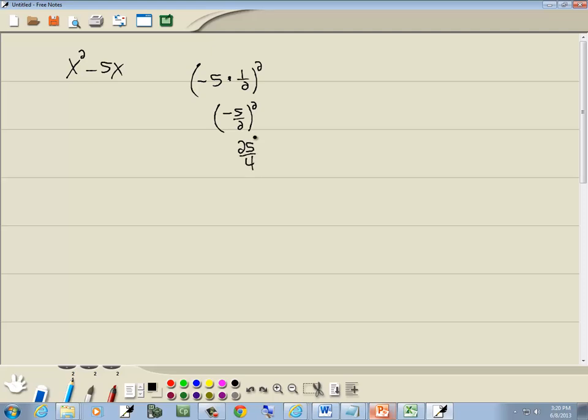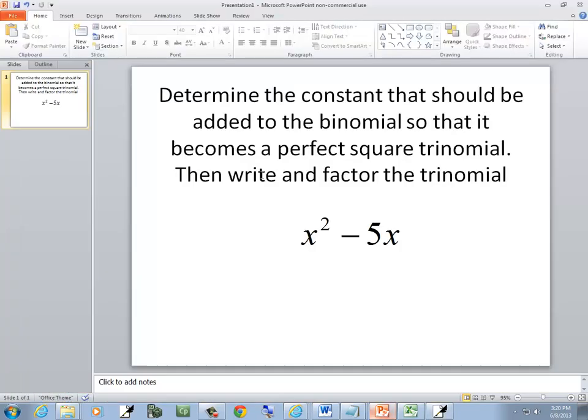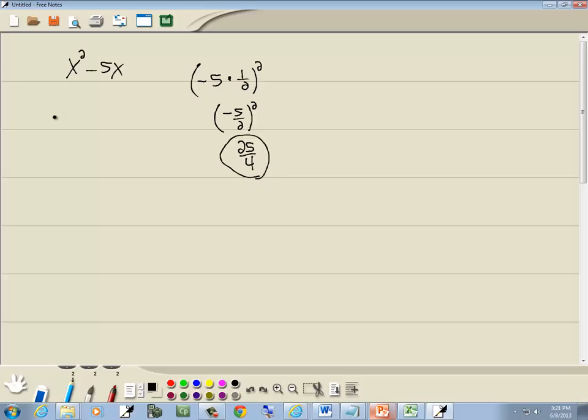Negative 5 times negative 5 is 25, 2 times 2 is 4. And this is the constant they're asking about. They then want us to add that and then factor the trinomial. So we've got x squared minus 5x plus 25 over 4.